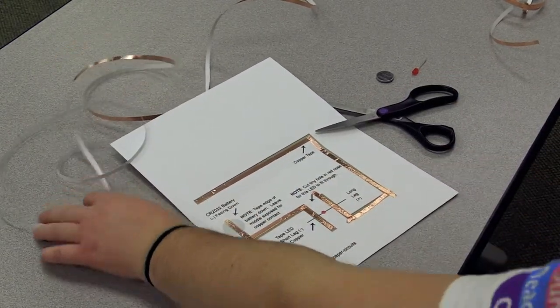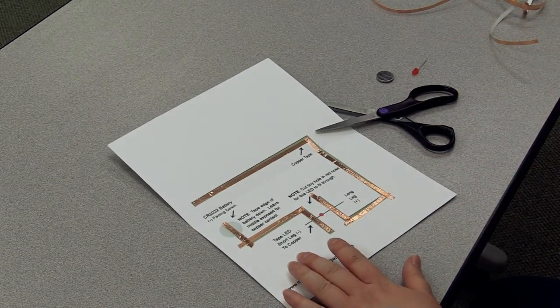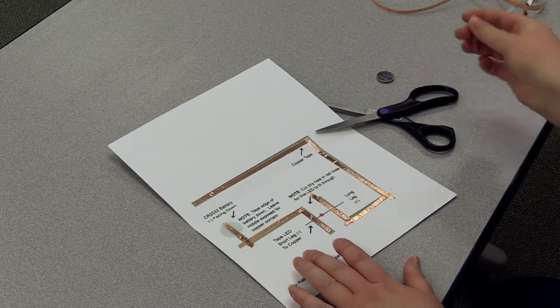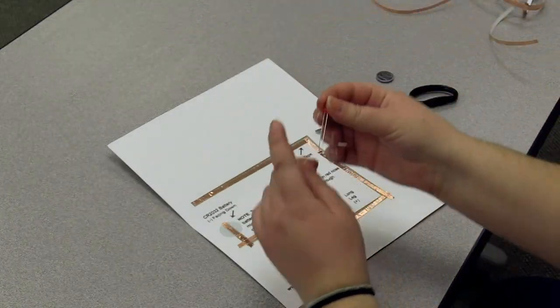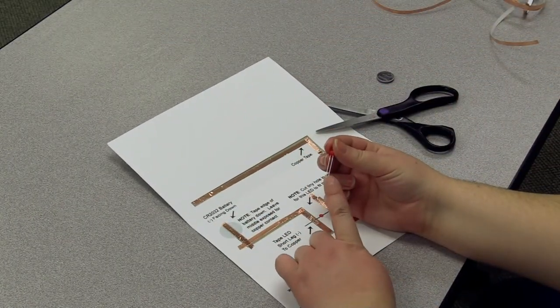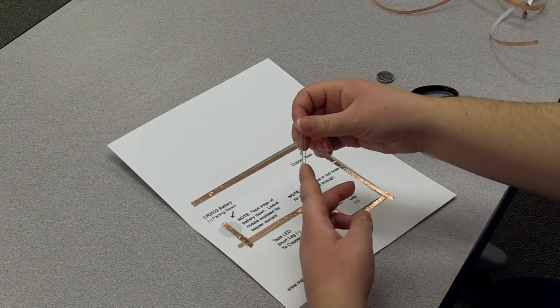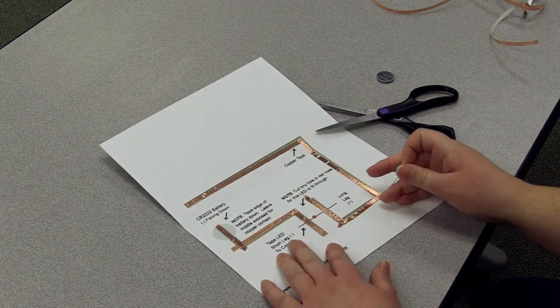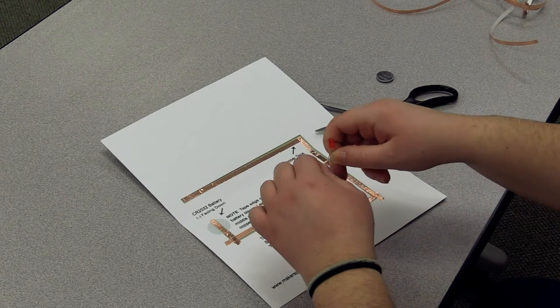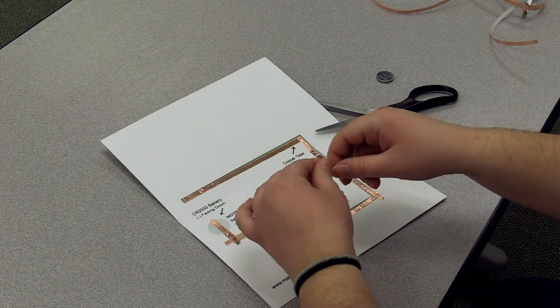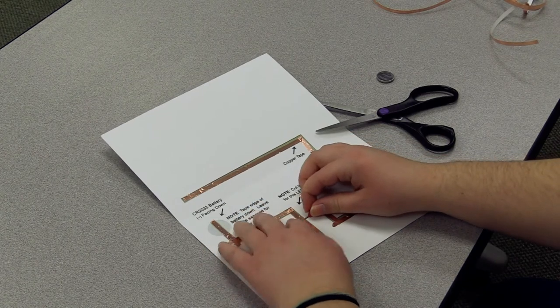Okay, so once the copper tape is all laid down, just put it aside because you're going to need it later. But the next thing you're going to do is take your light. So one side of the light is the longer side and one side is the shorter side. So the shorter leg is the negative and the long leg is the positive. And on your template here it's going to tell you which side you want the short leg and the long leg on. So you're actually just going to bend them so they are horizontal so that the light looks like this.